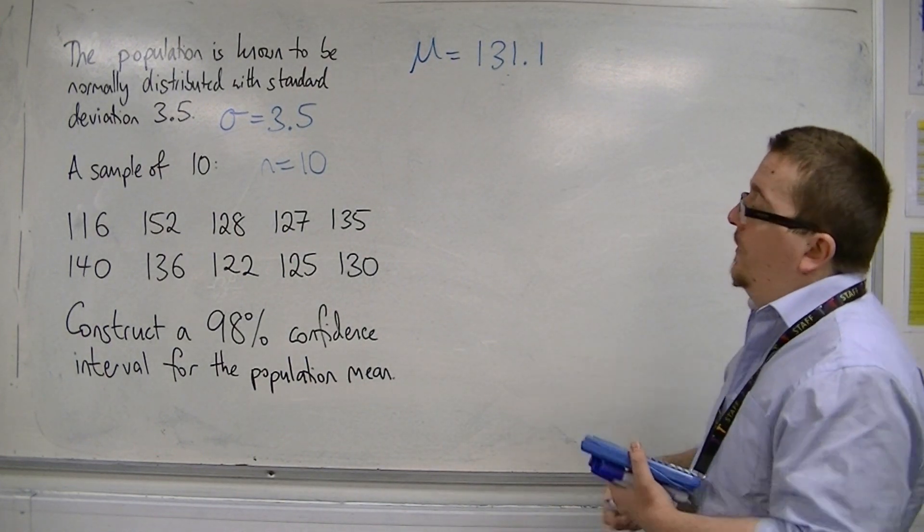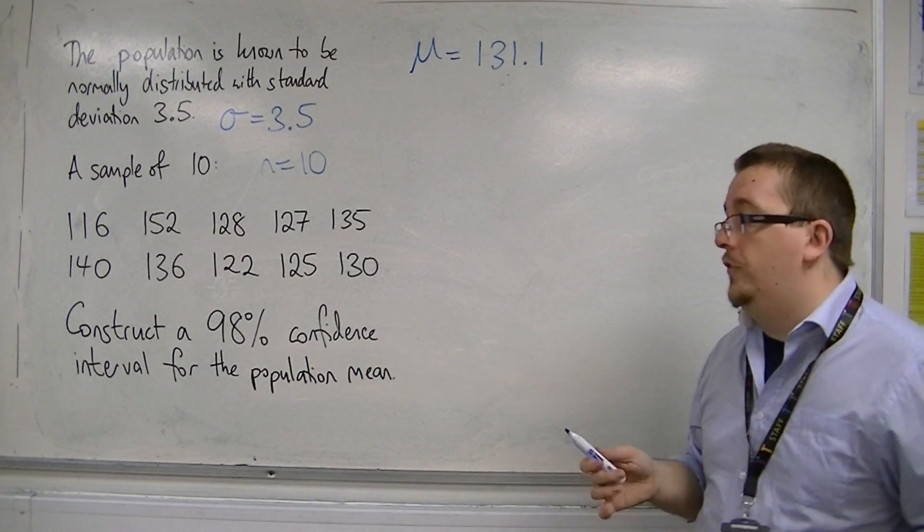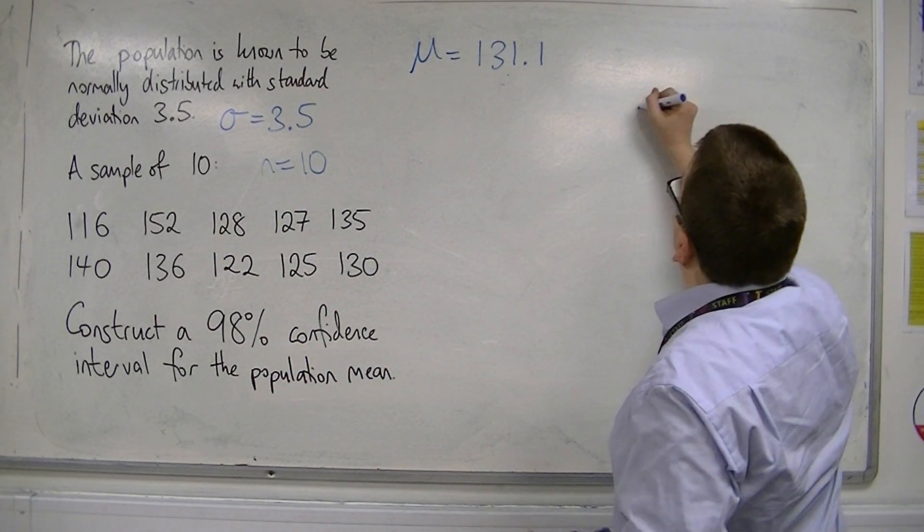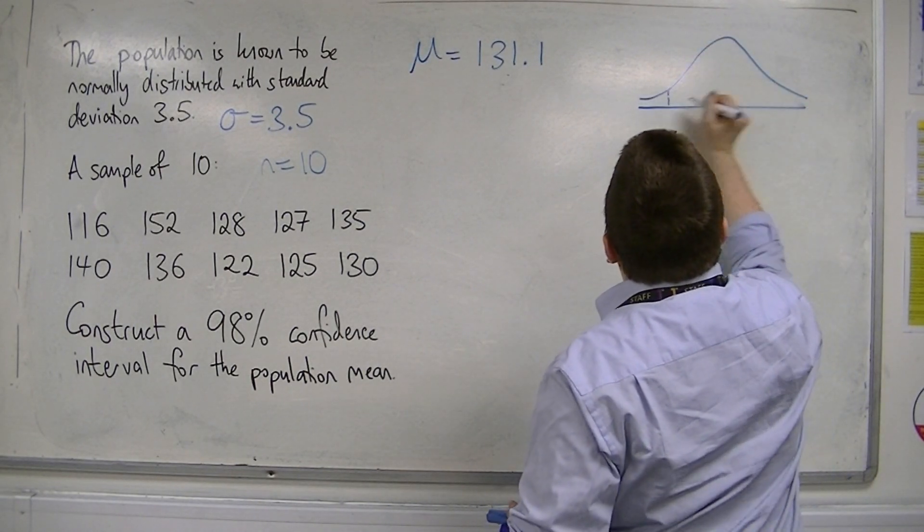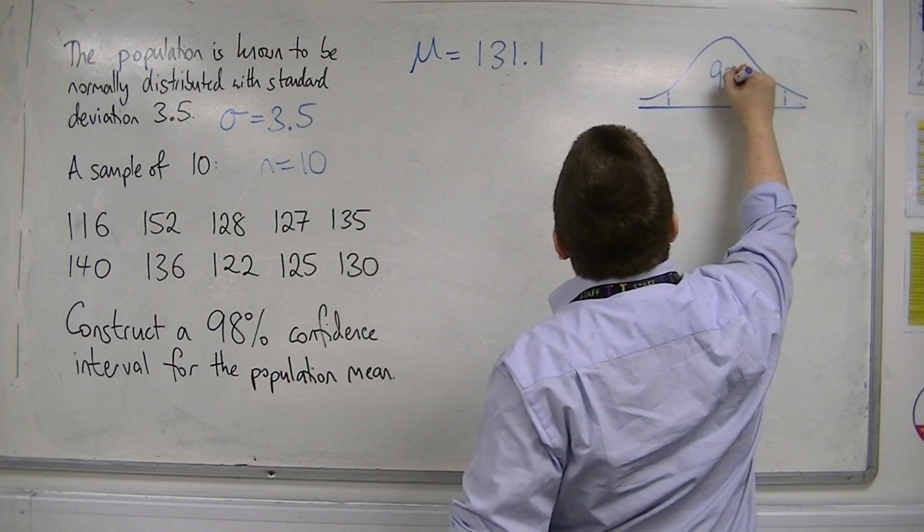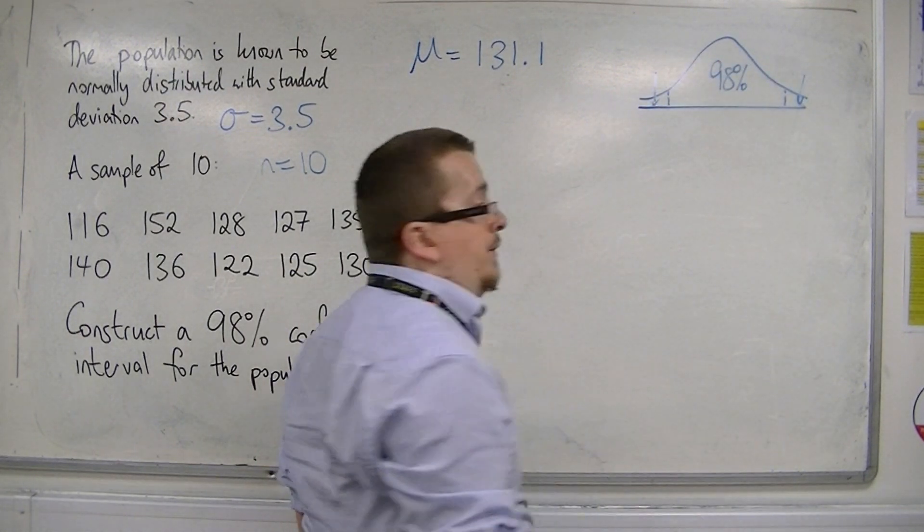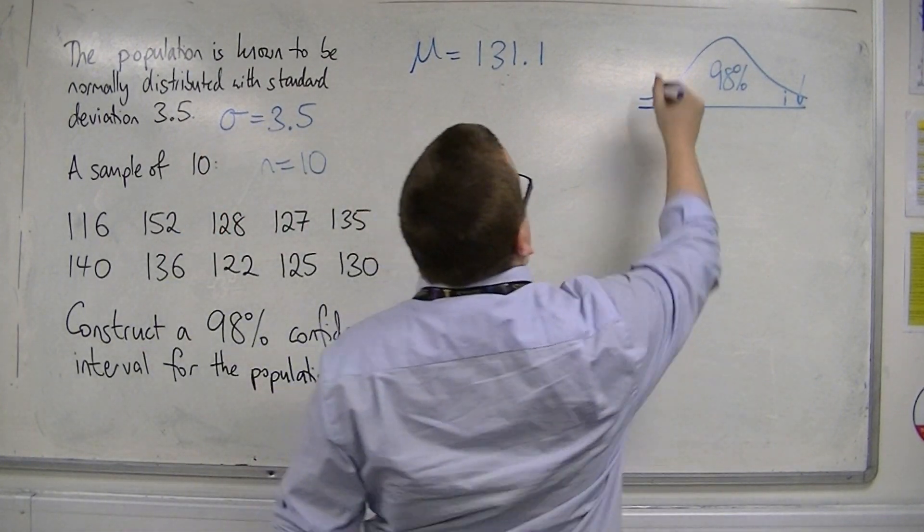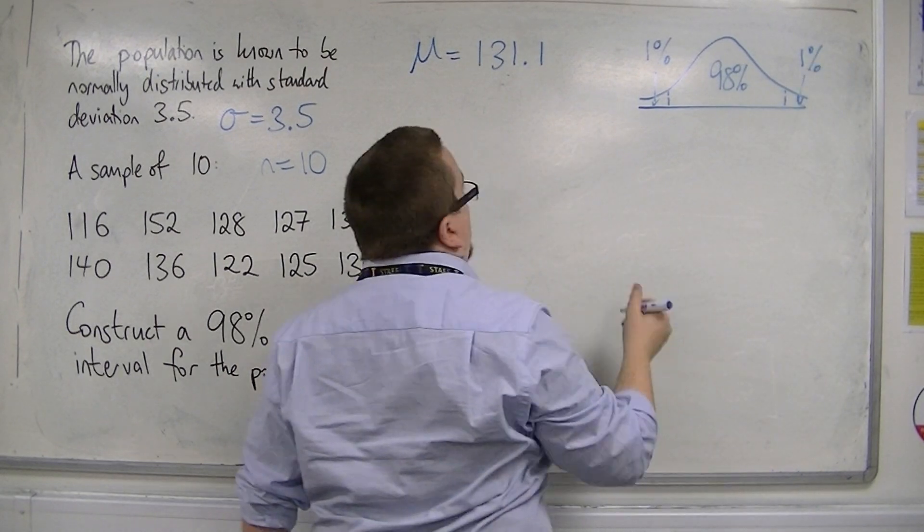So, then we need to think about, well, we want to construct a 98% confidence interval for the population mean. So, we want to draw a little bell curve and think, right, we want 98%. So, inside the two tails must be 1% each in order to make it all add up to 100%.